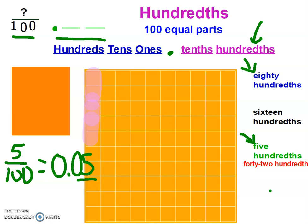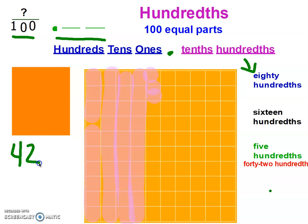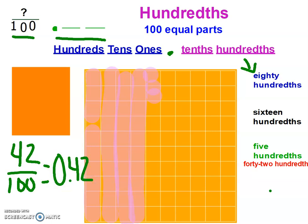The last one: forty-two hundredths. To write that as a fraction it is forty-two over a hundred. Forty-two hundredths equals 0.42. Hopefully you got all of those correct.